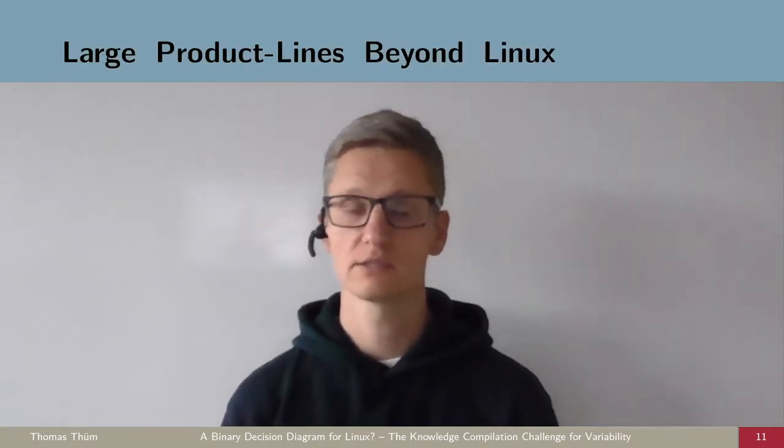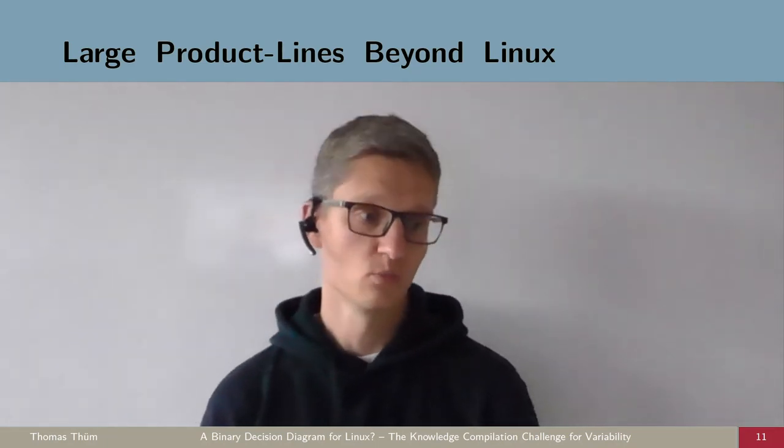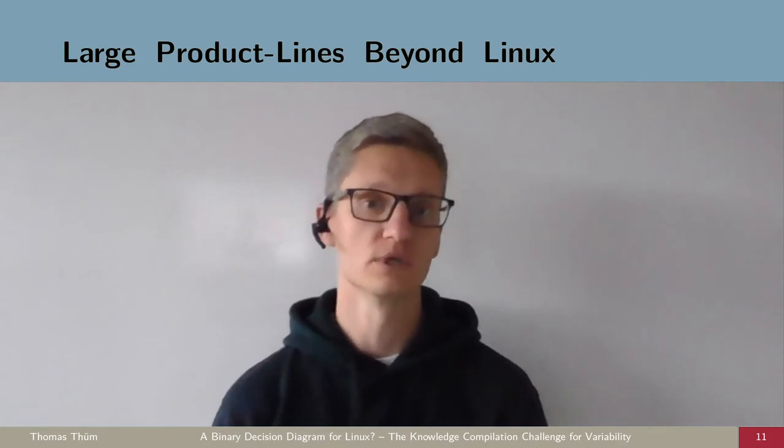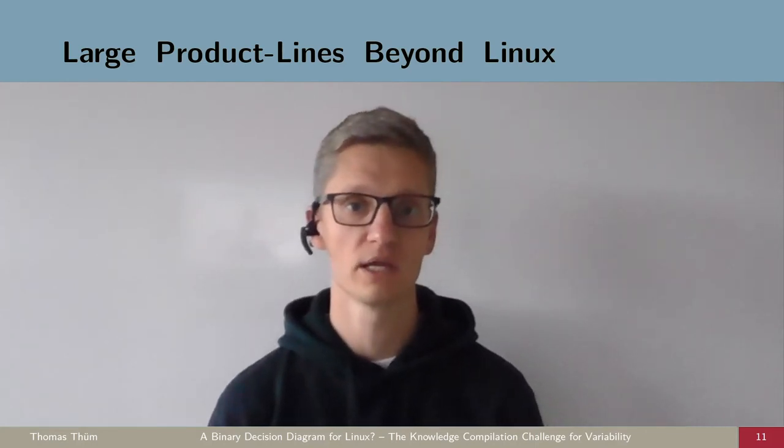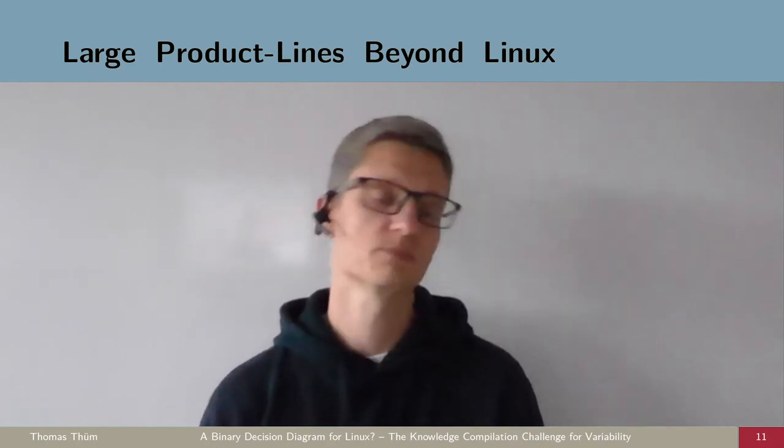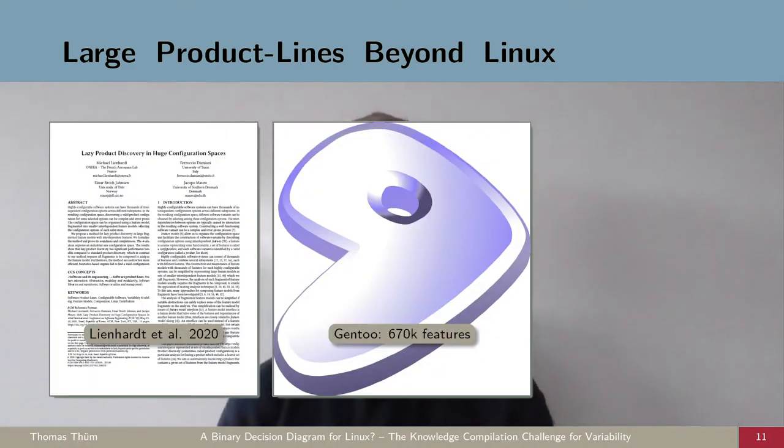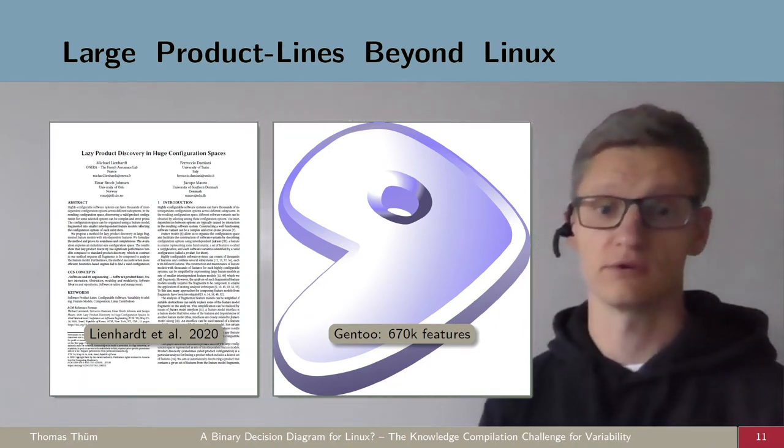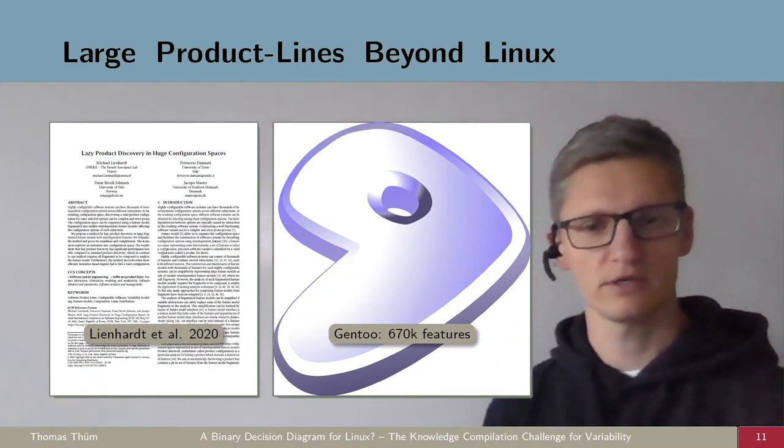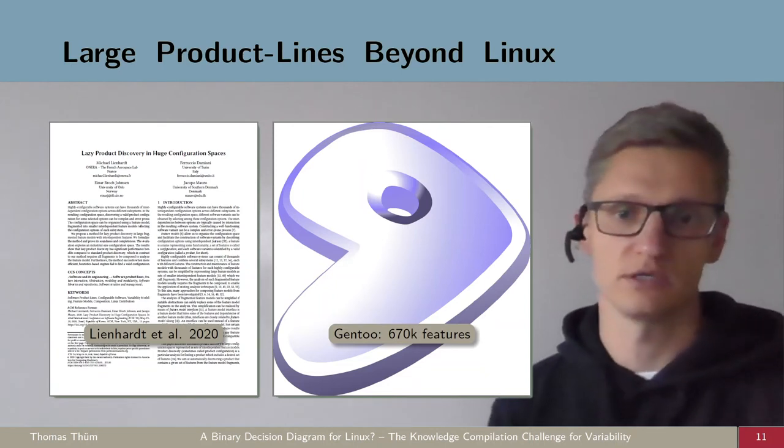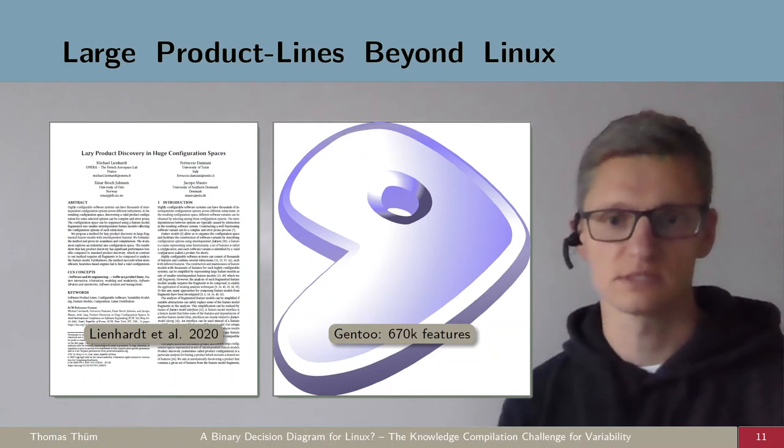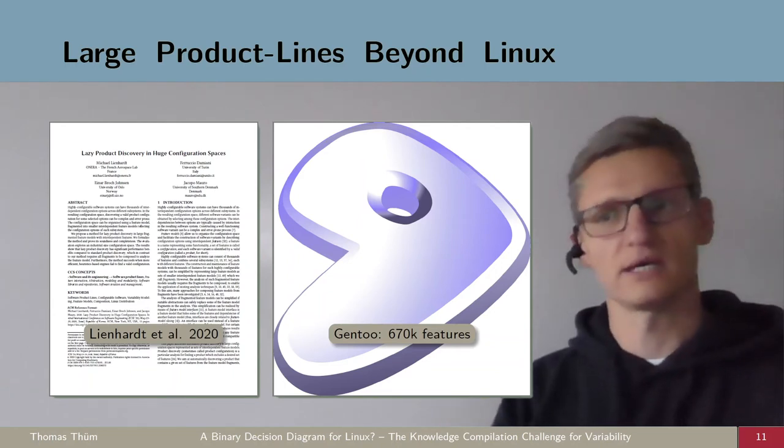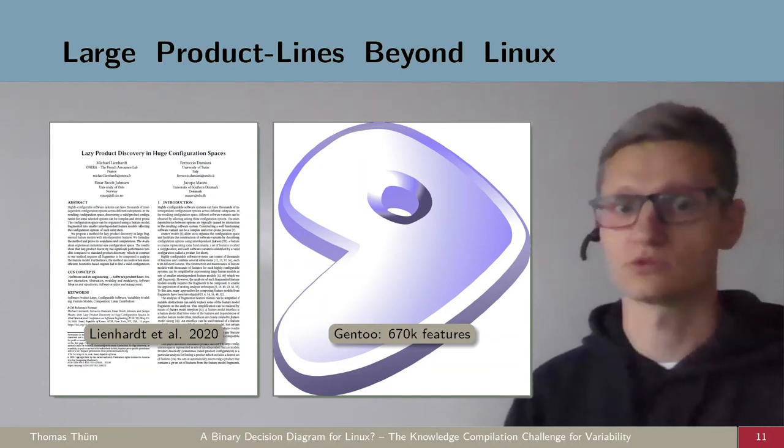But of course, there are other product lines, other large product lines beyond Linux. One of the other models for which we in previous work were not able to compute the number of valid configurations was an industrial product line. Unfortunately, it's not yet publicly available. We are working on that. But in the meantime, you can work on Linux, but there are also many other large product lines. I want to bring your attention to one example, which is the Gentoo distribution. It's a derivative of Linux, but it comes with a variability-rich package manager. There's this recent study from this year at ICSE that showed that there are actually 670,000 features. Of course, this number needs to be treated a bit with care because there are duplicates among those features. But still, it's a high number and it's unclear how to deal with that.